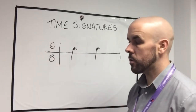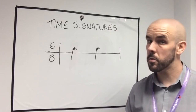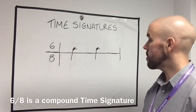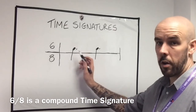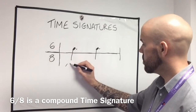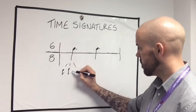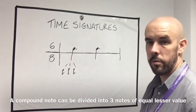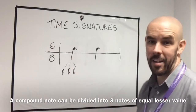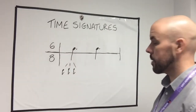We talked about the third thing the time signature tells us — whether it's in simple or compound time. We know that 6-8 is in compound time, because that beat note which we just added up from the quavers is equal to three notes of equal lesser value — your three quavers, as you can see there. So that tells us it's in compound time.